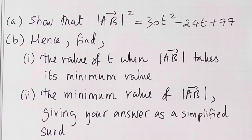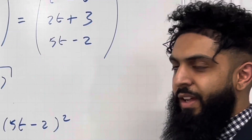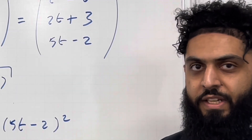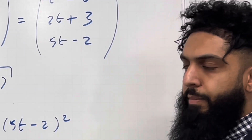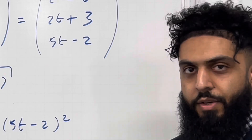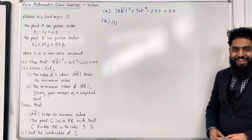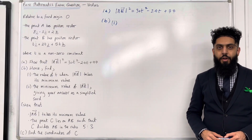Hence — so we have to refer back to our answer in part A — find part 1: the value of t when the magnitude of AB takes its minimum value. Please pause the video, have a go at part 1 of part B, and once you've got your complete solution, then play the video. Let's have a look at the solution to part 1 of part B.